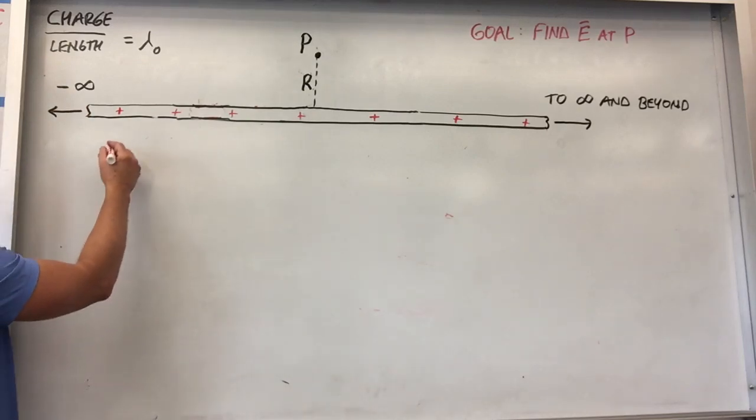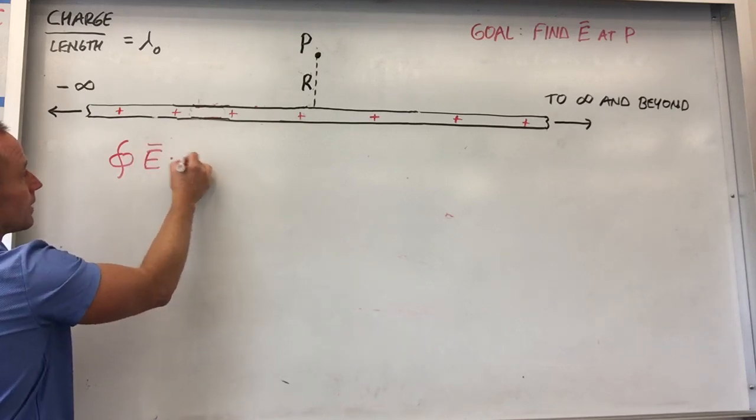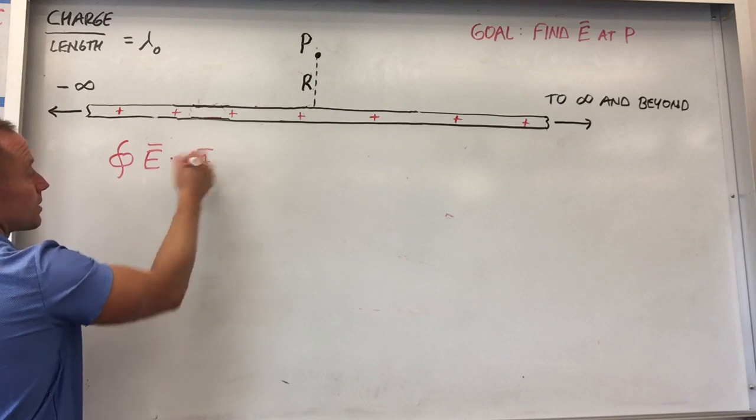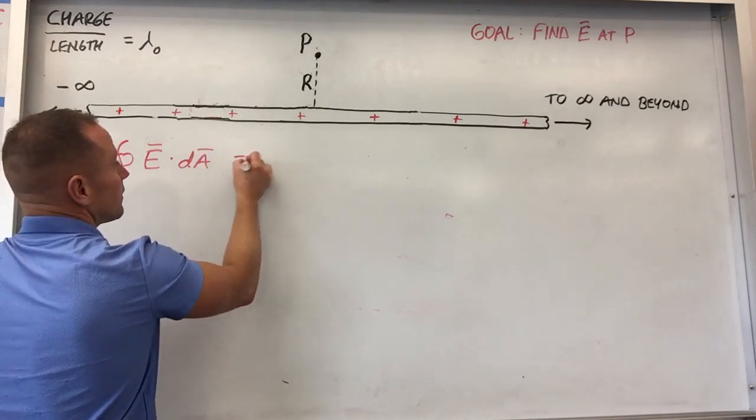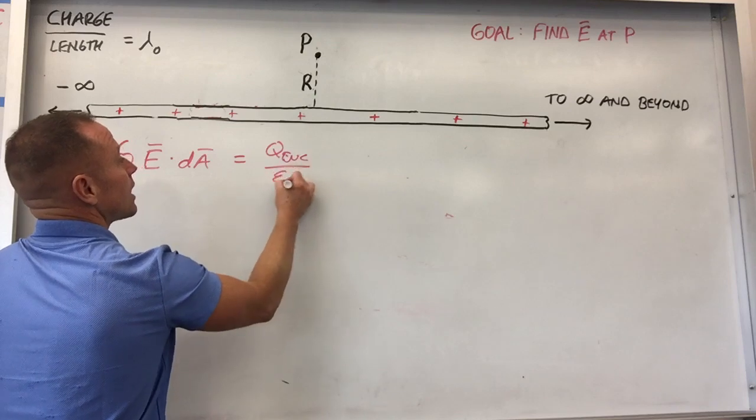And so Gauss's law, first I'll put it down, Gauss's law says that the flux through a closed surface, any closed surface, integral E dot dA, which is the flux through a closed surface, equals the charge enclosed by that surface over a constant.